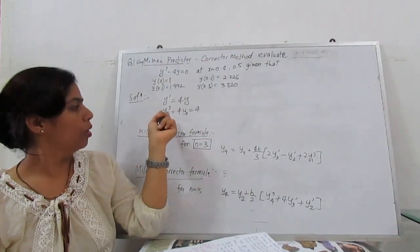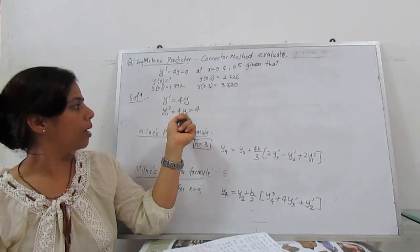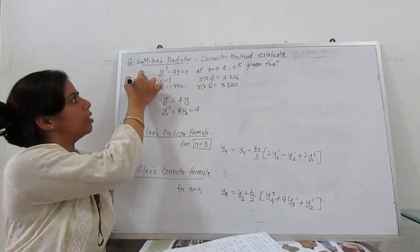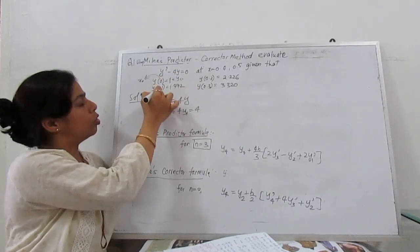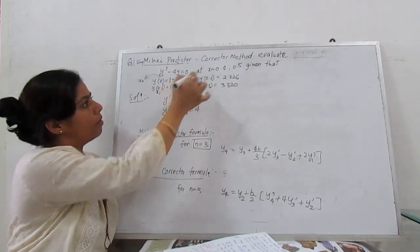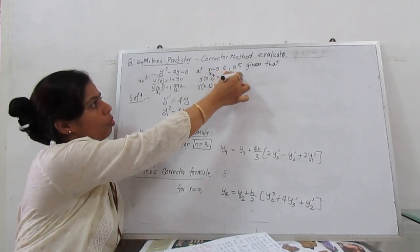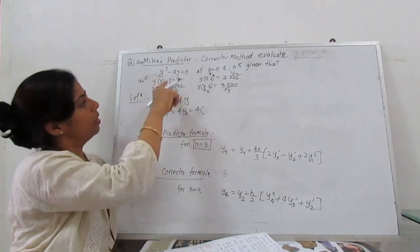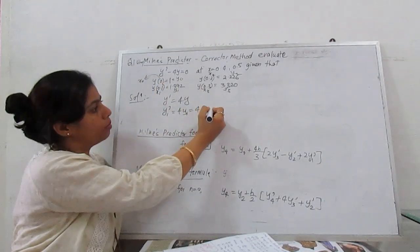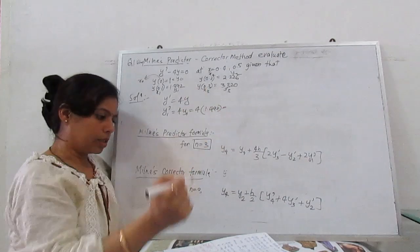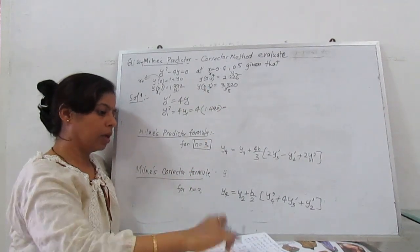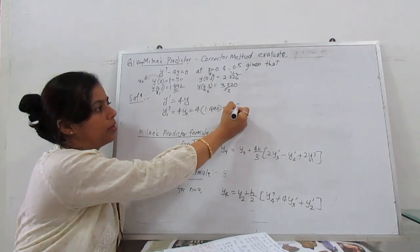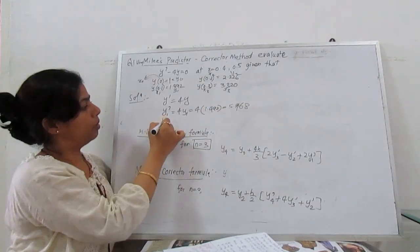So y'₁ we have to calculate. y'₁ is 4 times y₁. See, this is x₀, this is y₀, this is x₁, y₁, x₂, y₂, x₃, y₃. So 4y₁ is 4 times 1.492, which gives 5.968.